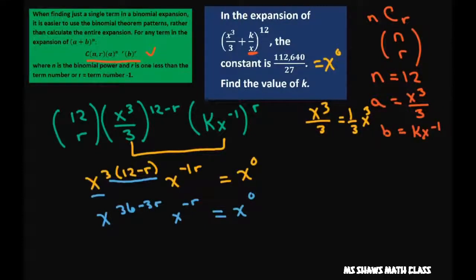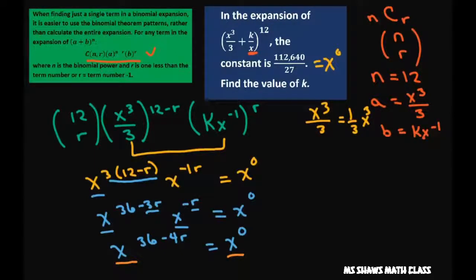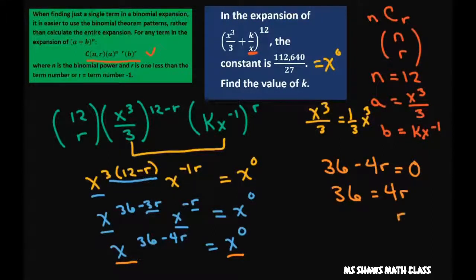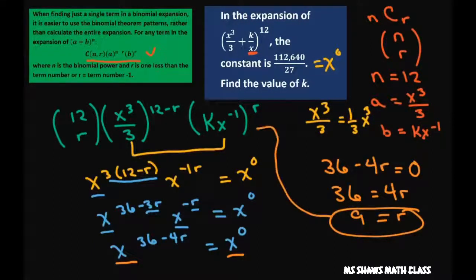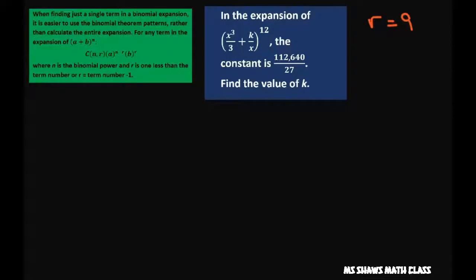Using the product property, we combine to get x to the 36 minus 4r, which equals x to the zero. Now that the bases are the same, we can just solve for r: 36 minus 4r equals zero, so 36 equals 4r, and r equals 9.